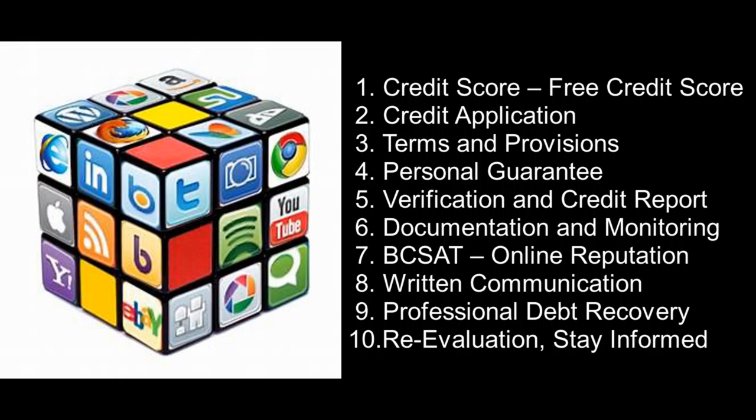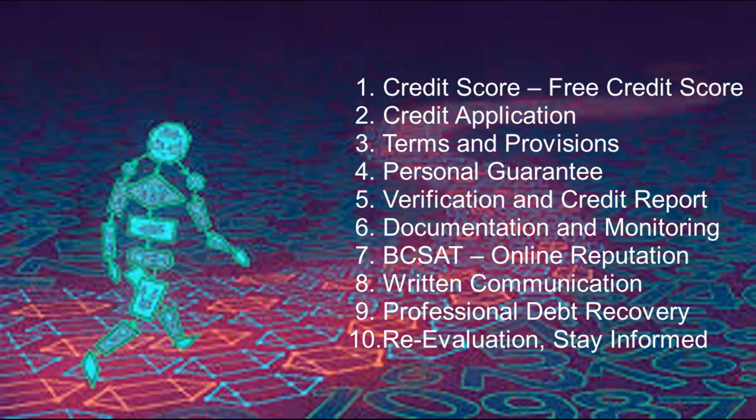What are the 10 steps? First, it starts with getting a credit score. Step two is the credit application. Step three is going over your terms and provisions. Step four is a personal guarantee. Step five is verification and getting an actual credit report if necessary. Step six is documentation and monitoring — you want to continue to monitor scores and participate in online reputation. Step seven is written communications when things go south. Step eight might include looking for a collection agency or professional debt recovery. Step nine is reevaluate and stay informed.